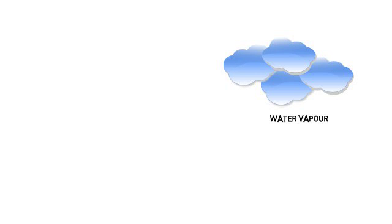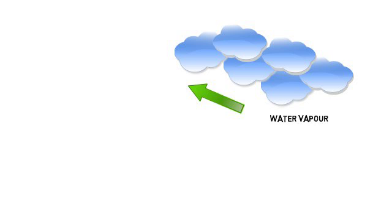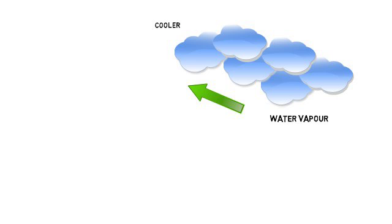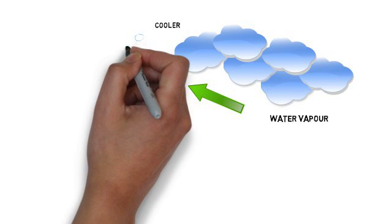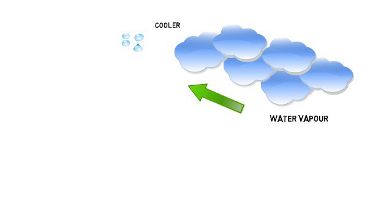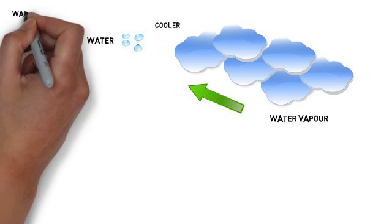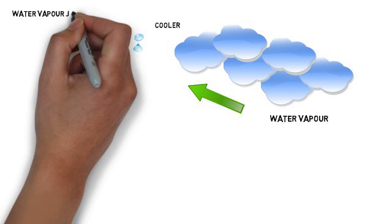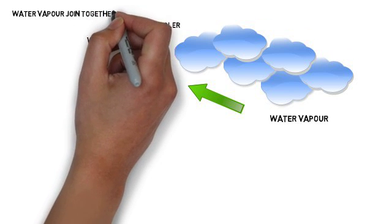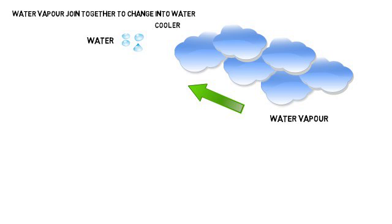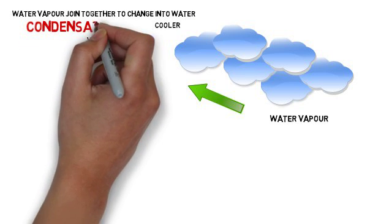Now let's follow the water vapor. As the water vapor, which is hot air, goes up and up in the sky, it becomes cooler. When it reaches a cool place in the sky, it takes the shape of water again. So when water vapor reaches cooler places, they join together and again change into water. This process is called condensation.